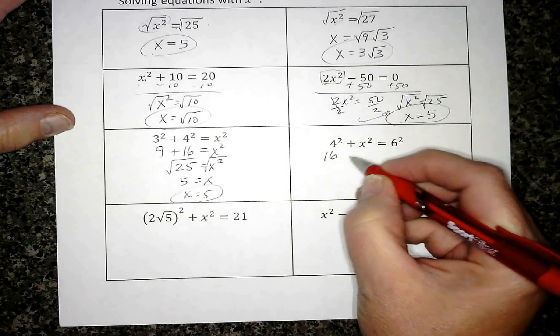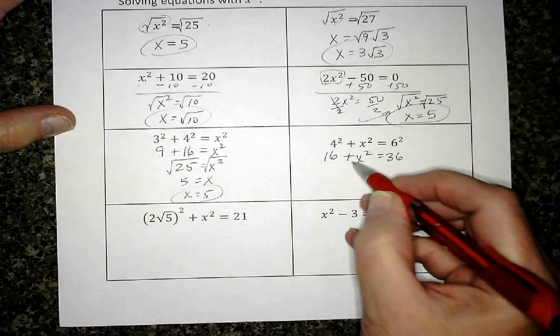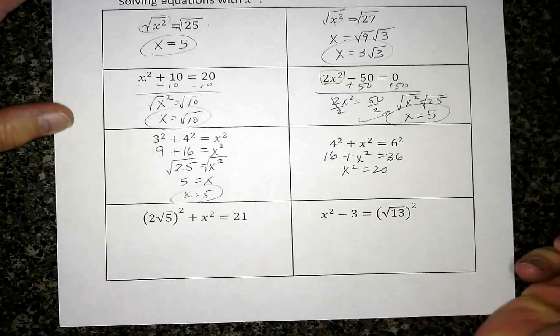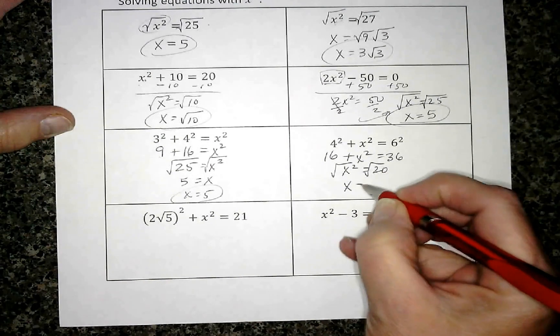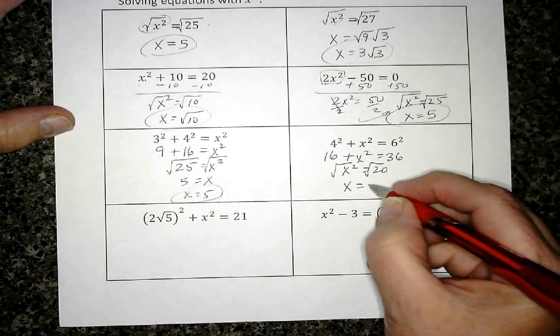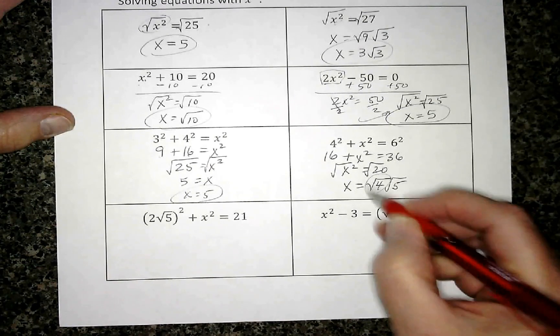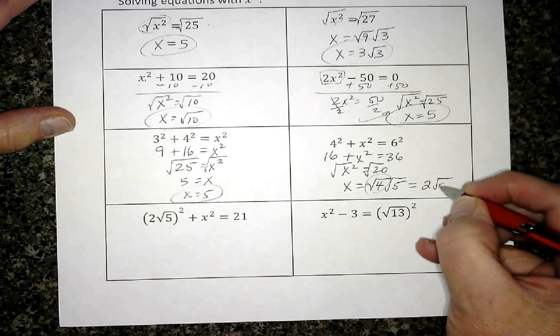Squares first. Subtract 16 to get the x² by itself. Square root to get just plain x. Square root of 20 can be simplified into 4 times 5. 4 is the perfect one, so x is going to equal 2√5.